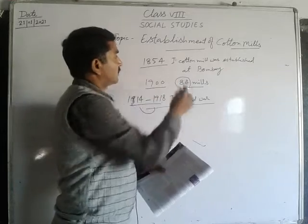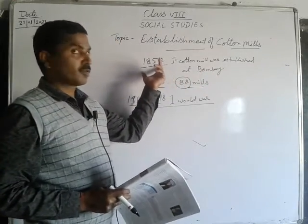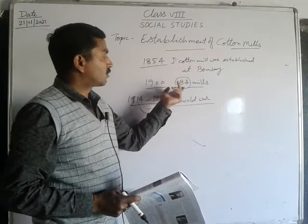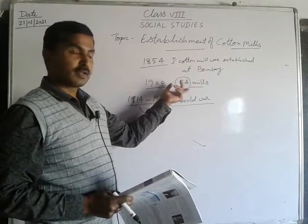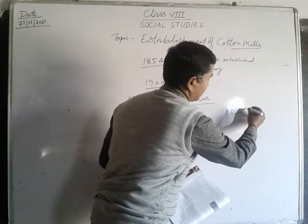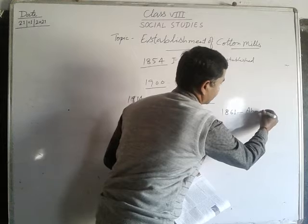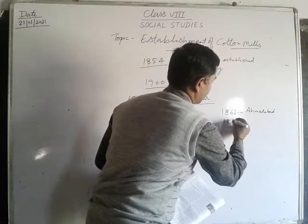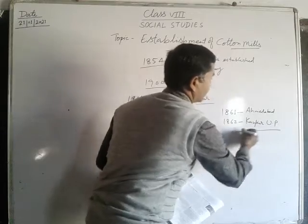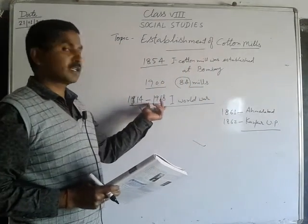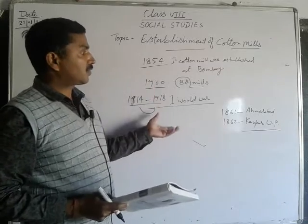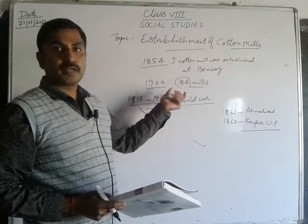The first cotton mill was established at Bombay in 1854, and from 1854 to 1900, within 46 years, the number of mills grew to 84. In 1861, a mill was established at Ahmedabad, Gujarat, and in 1862 at Kanpur, Uttar Pradesh. From 1914 to 1918, during the First World War, demand for cotton clothes increased in Indian markets, boosting the growth of Indian cotton mills.